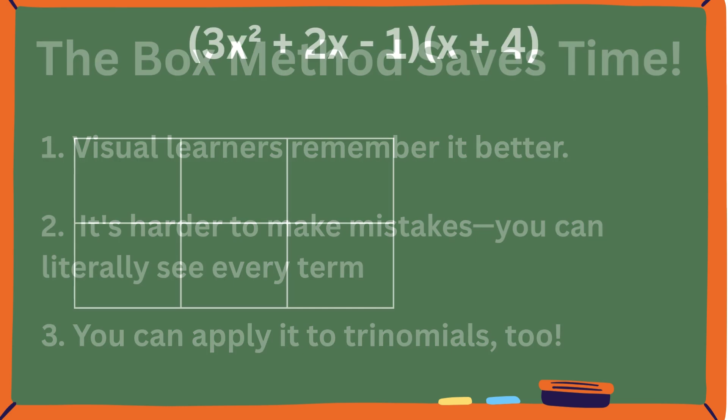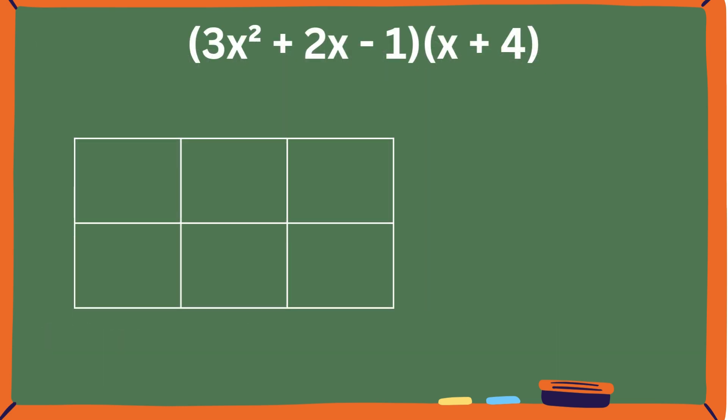Let's level up. Say you have 3x² plus 2x minus 1 times x plus 4. That's a mess with FOIL, but with a box? Much easier. Write the trinomial across the top: 3x², 2x, and negative 1. Write the binomial down the side: x and 4.